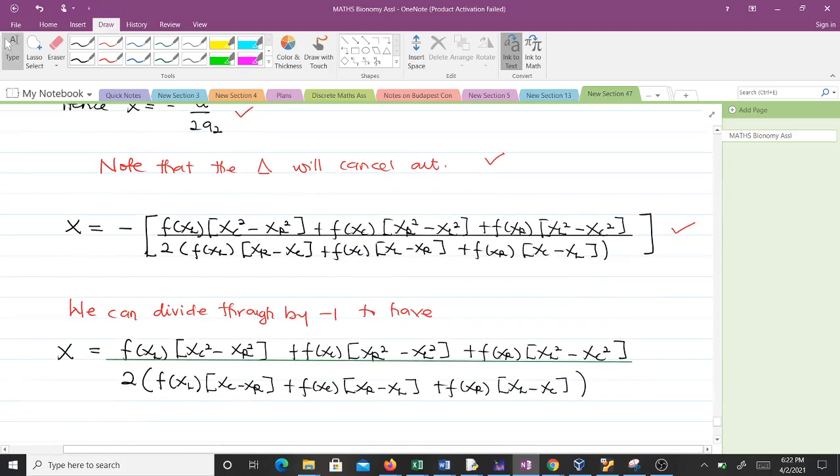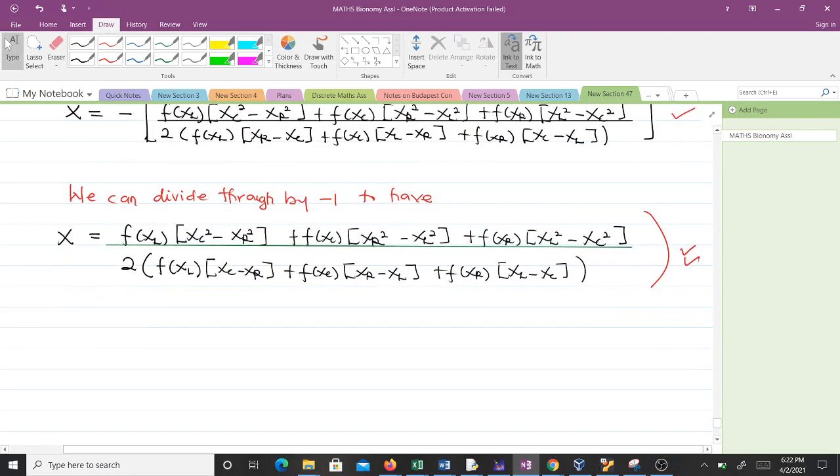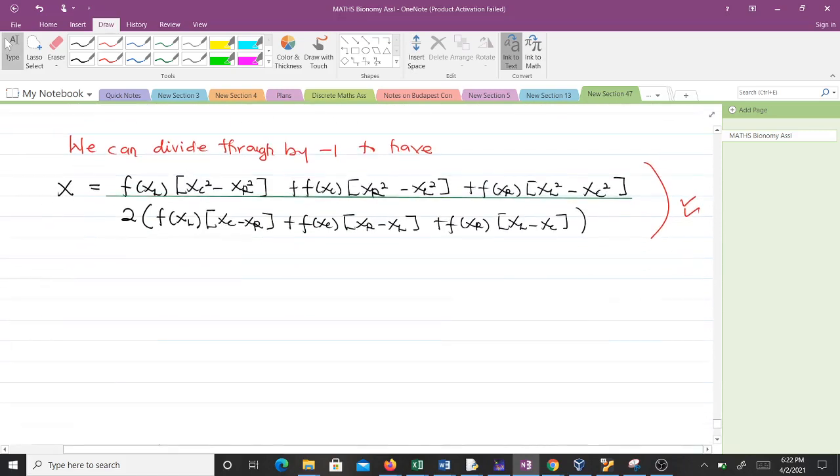When we use three-point approximation, we have our x*, the optimizer, given by what we can see here. This formula is very important, you should take good note of it. It is from this that we can apply them in Powell's algorithm and in the DSC algorithm. That's all for this video, thank you very much and see you in the next video.